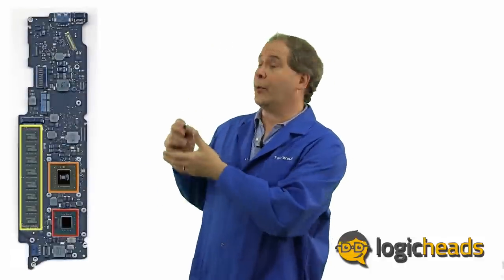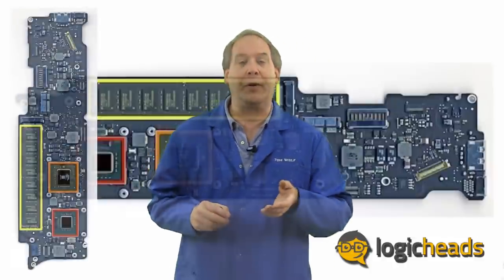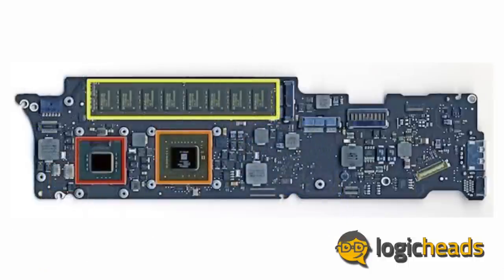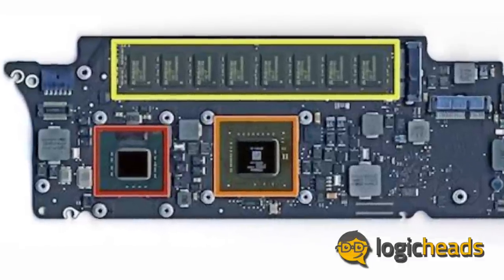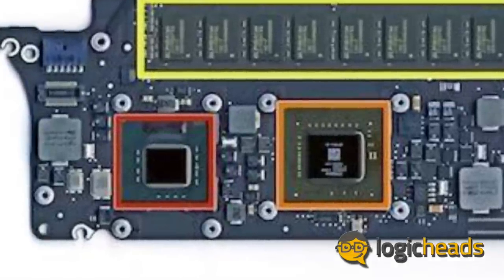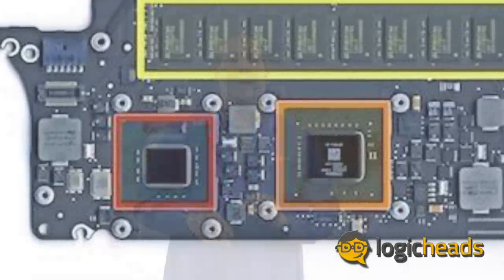Now, this is a modern motherboard. This is what happens to be out of the MacBook Air. The processor and the chipsets are highlighted in orange and red, and the onboard memory is inside that yellow block. Now, even at this magnification, you can't even see the logic devices, but I assure you, they are still there.